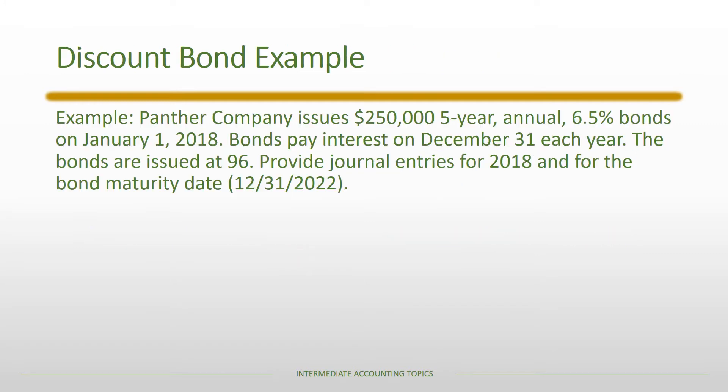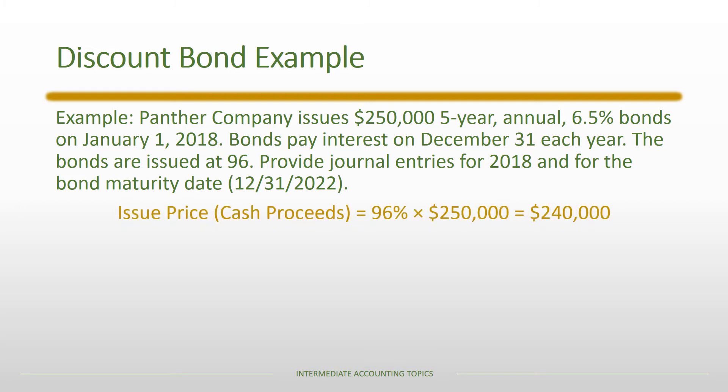Here's an example: Banther Company issues $250,000 of five-year annual bonds. The bonds have a rate of 6.5% and pay interest on December 31st each year. The bonds are issued at 96. We need to provide the journal entries for 2018 and for the bond maturity date on 12/31/2022.